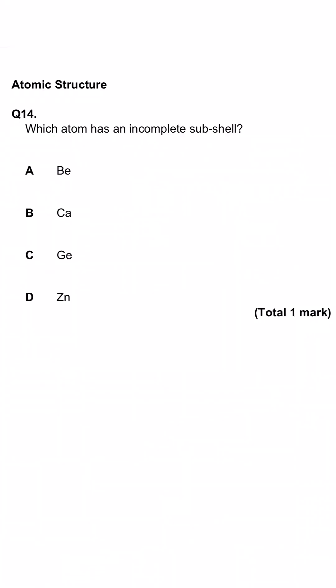The question is asking us about incomplete subshells, in other words, which subshells are partially filled. Now as a general rule, the S block is the first two groups.